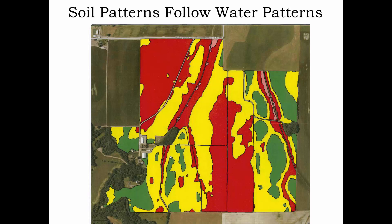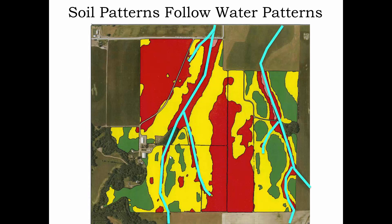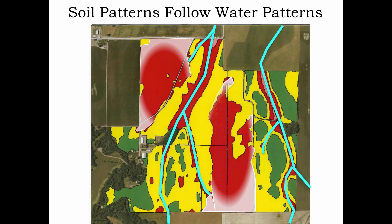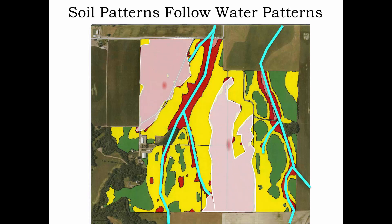This is a soils map for a property south of where I live in Corvallis, Oregon. The red color represents a heavy clay soil type, which occupies the thin branch drainages, as you can see here, as well as the ridges in between them, which show up in white.